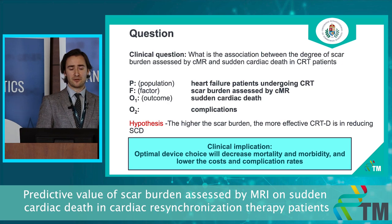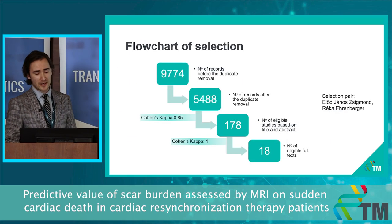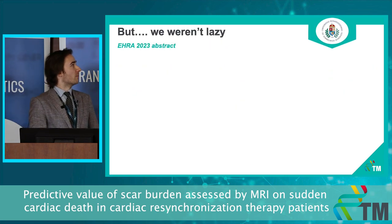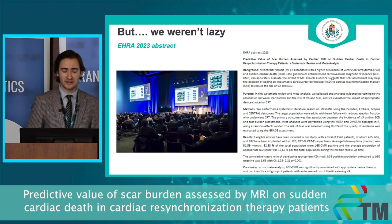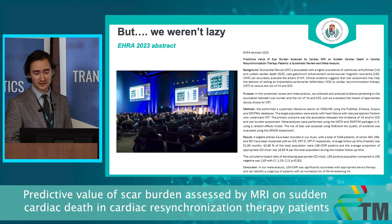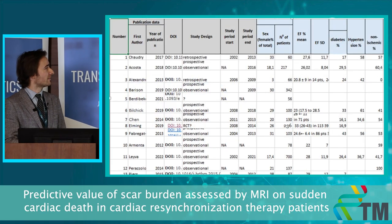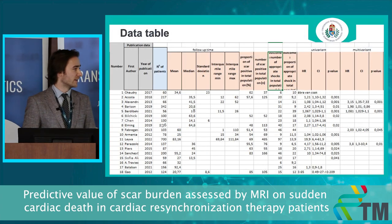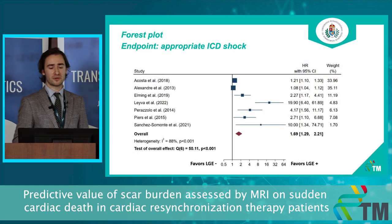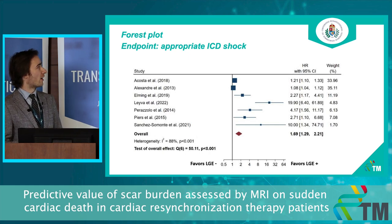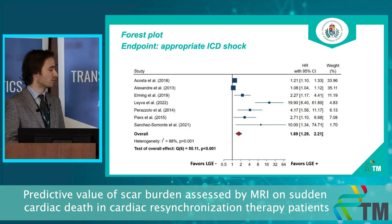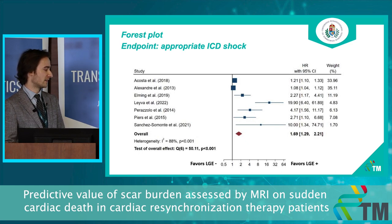The clinical implication could be that optimal device choice would decrease mortality and morbidity, and also lower costs and complication rates. Here we can see the systematic search strategy, and we found 18 fully eligible texts. We are now at the data extraction phase, but we already submitted an abstract to the ERA Cardiology Congress. Here you can see the baseline clinical characteristics and the data table with all 18 articles. We already made a first forest plot where the endpoint was appropriate ICD shock.